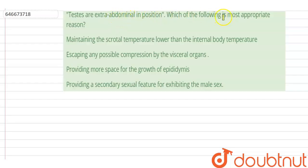Hello students, your question is: testes are extra-abdominal in position. Which of the following is the most appropriate reason? The options are: maintaining the scrotal temperature lower than the internal body temperature, escaping any possible compression by the visceral organs, providing more space for growth of epidermis, providing a secondary sexual feature for exhibiting the male sex.